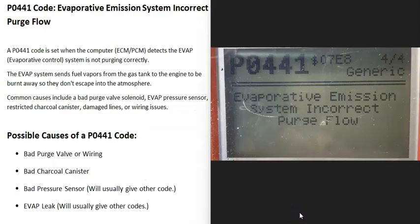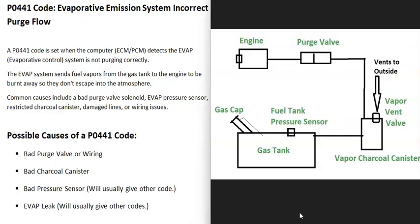Today I'm talking about a P0441 code — what it is and how you go about fixing it. The P0441 code is an evaporative emission system incorrect purge flow. Vehicles have what's called an EVAP system that takes all the gas vapors from the gas tank and feeds them back up to the engine to be burnt off, so they don't escape into the atmosphere.